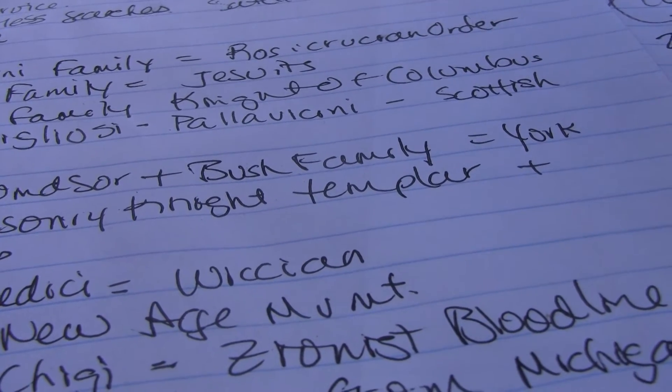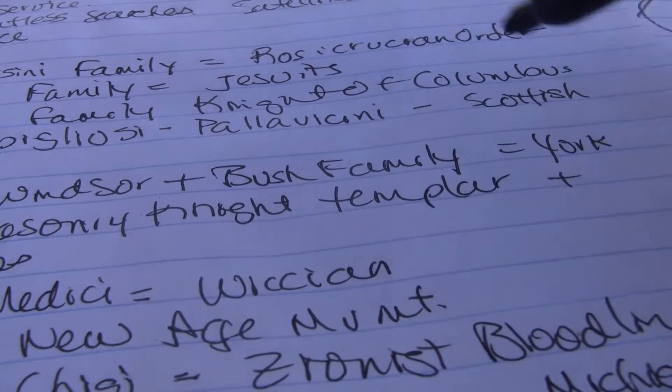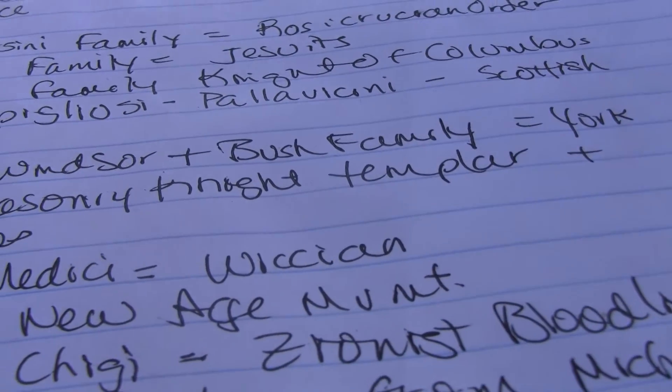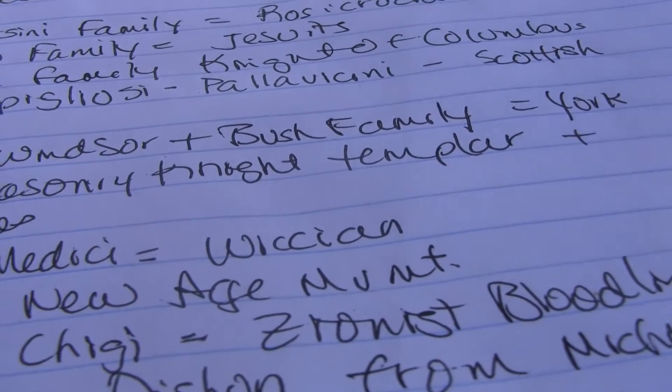And then you got your churches of course. And they hide behind 5013C. Well your cops work for, they can sign up for any one of these. But in the end they work for the bloodline. The crown.